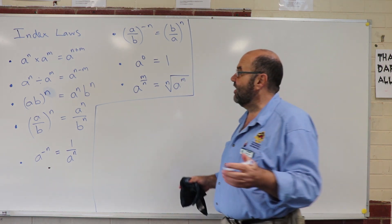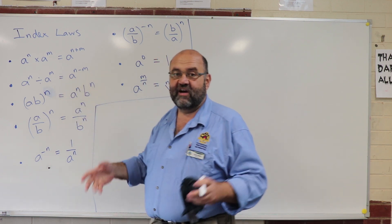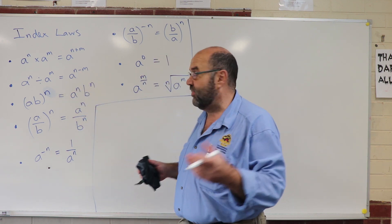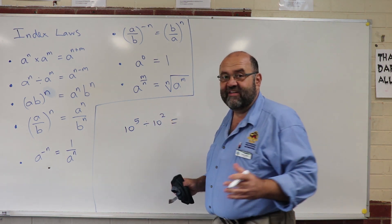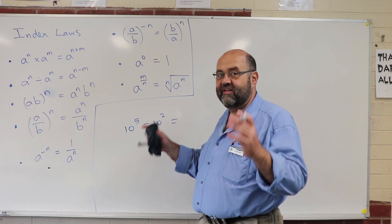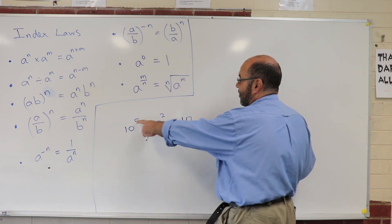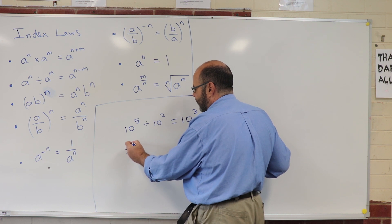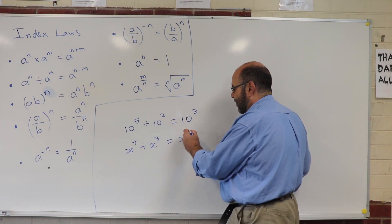What about the second one? It's very much like it. It says that when we're dividing, we subtract our powers. So a to the M divided by a to the N — the base does not change — it's going to be a to the power of N minus M. For example, 10 to the power of 5 divided by 10 to the power of 2: the base doesn't change, the 10 stays, and I subtract my powers. 5 take away 2 is 3. It doesn't matter if it's numbers or pronumerals. So x to the power of 7 divided by x to the power of 3 — the base doesn't change, I subtract powers — it's x to the power of 4.